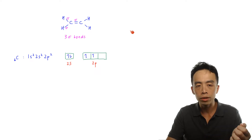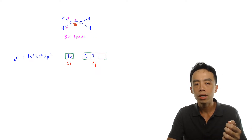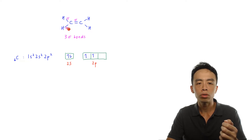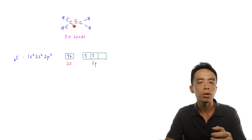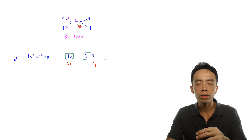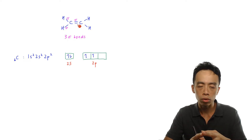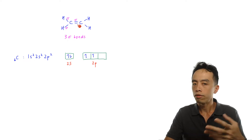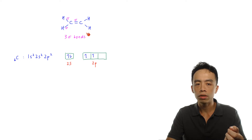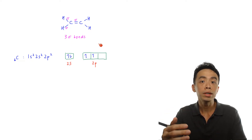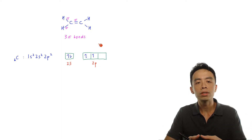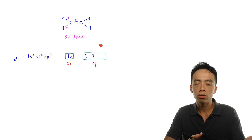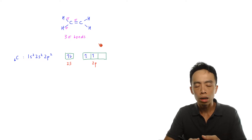If I consider ethene carbon, this carbon has one single carbon-hydrogen bond, another single carbon-hydrogen bond, and one double carbon-carbon bond. If it is a single bond, it will be a sigma bond. If it is a double bond, it will be one sigma and one pi bond. So in total this carbon has three sigma bonds, and from this we can deduce the state of hybridization. Three sigma bonds corresponds to sp2 hybridization.